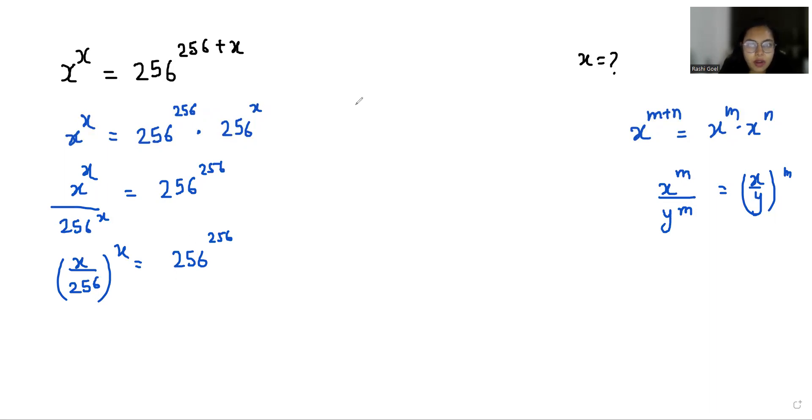Now I am going to divide by 256 to the power of 256 on both sides. We can cancel this out, so it becomes (x/256)^(x/256) equals 256.